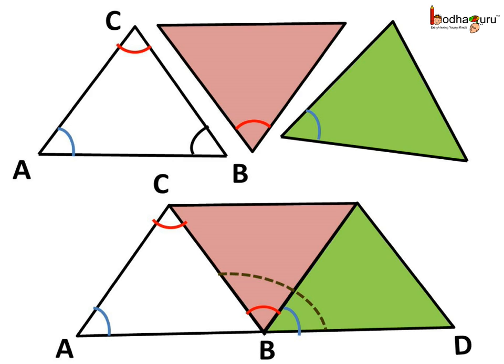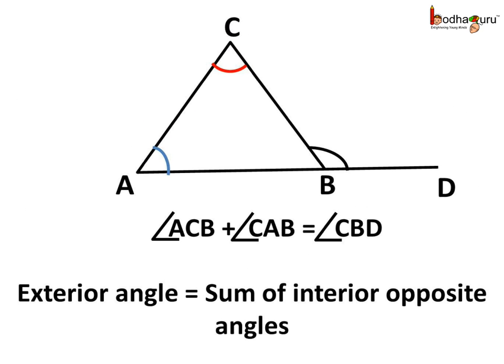So, the exterior angle CBD is equal to the sum of the interior angles, that is angle ACB which is angle C, plus angle CAB which is angle A. If we observe carefully, angle A and angle C are the opposite angles to the exterior angle CBD. So we can say: the exterior angle is equal to the sum of the interior opposite angles in a triangle.